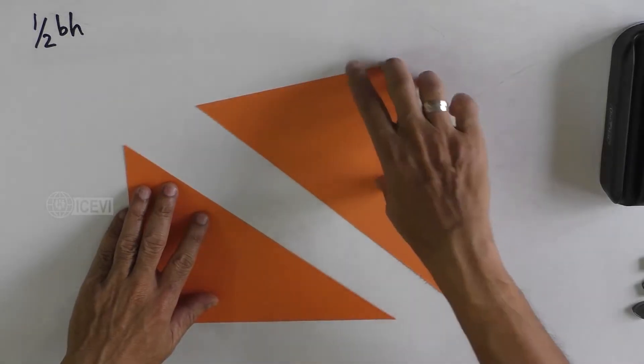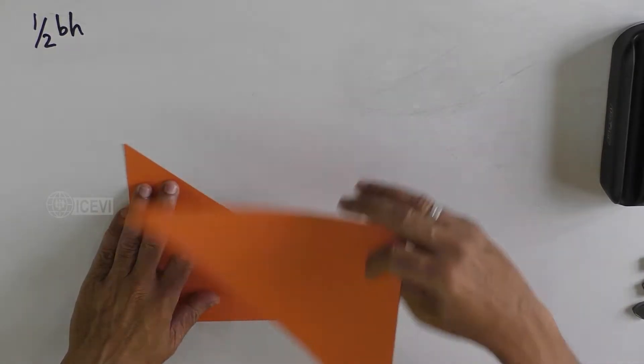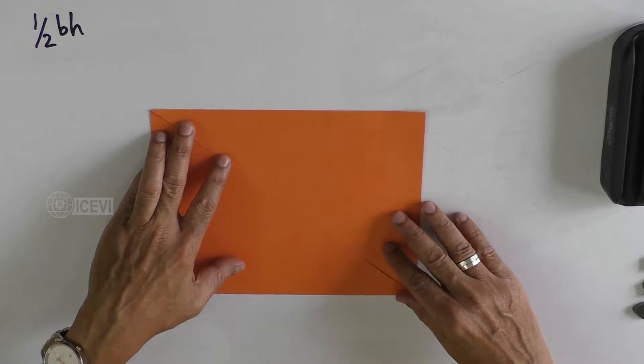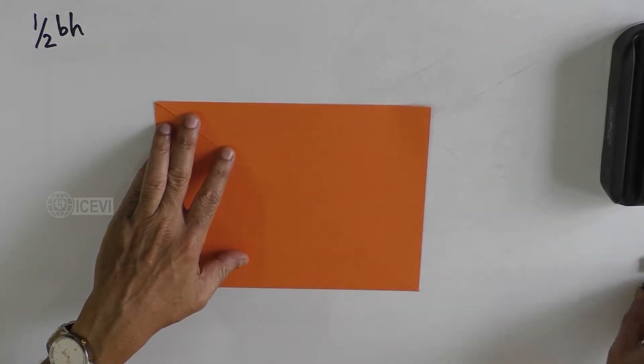Let us take two triangles. These two triangles are put together and now we have a rectangle.